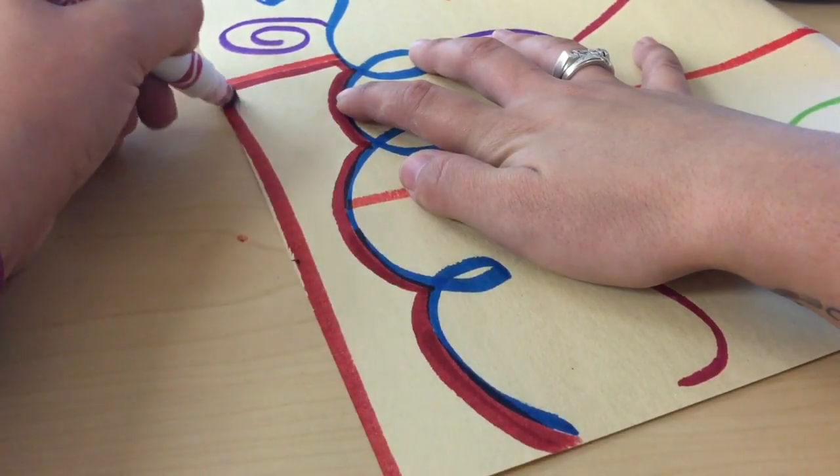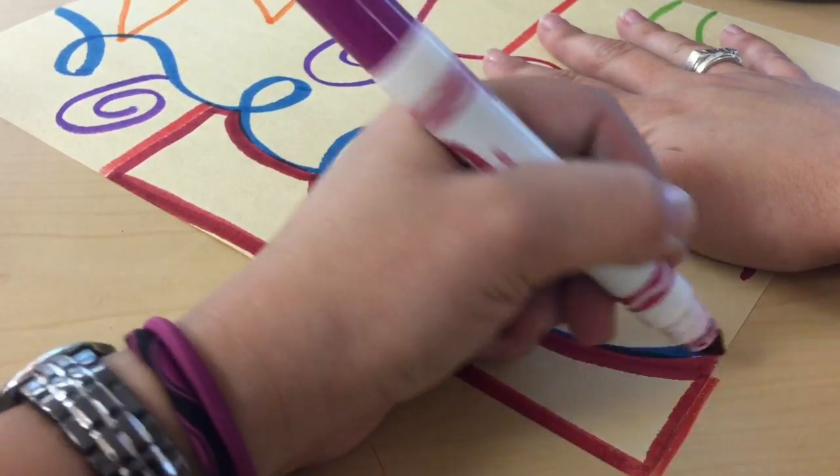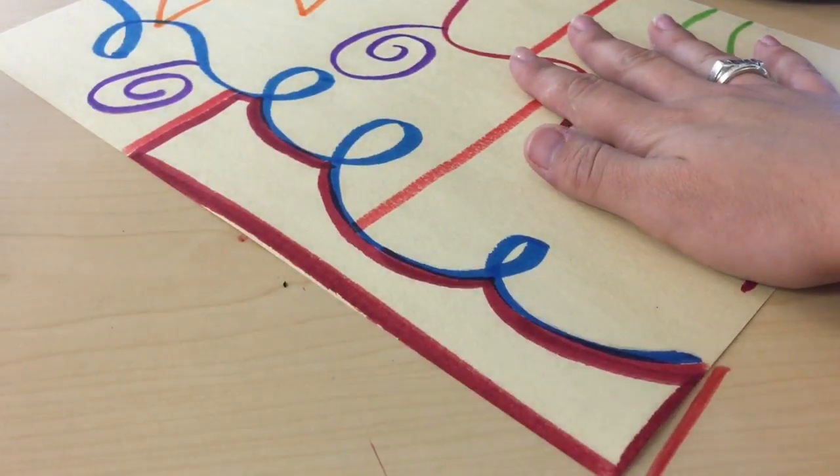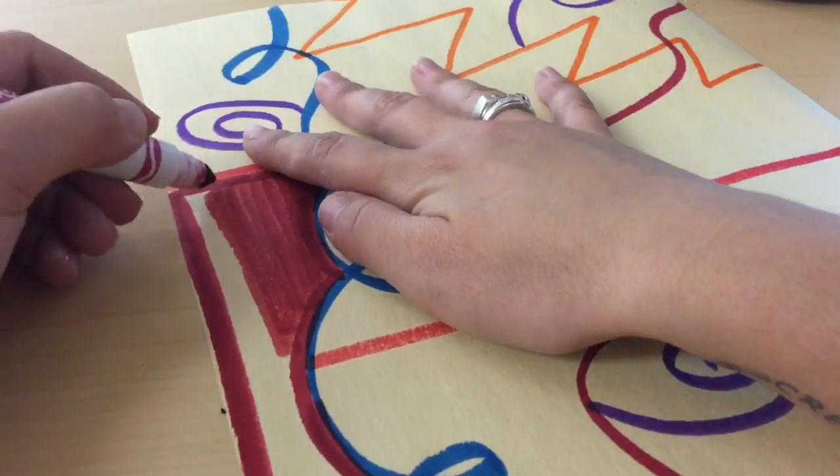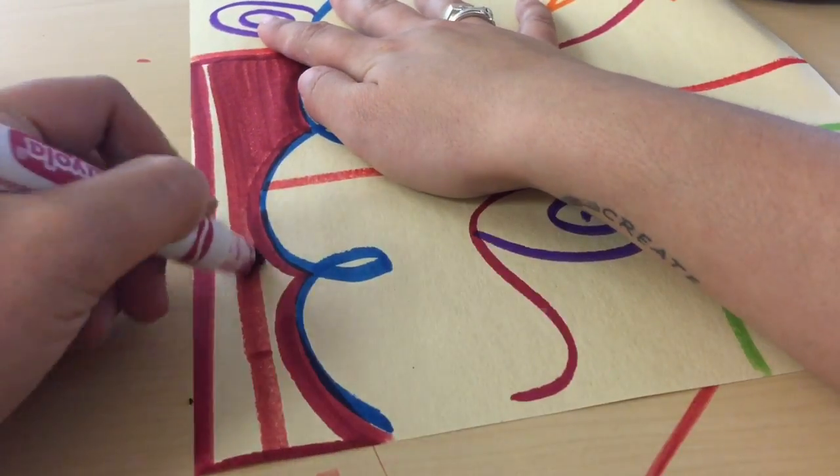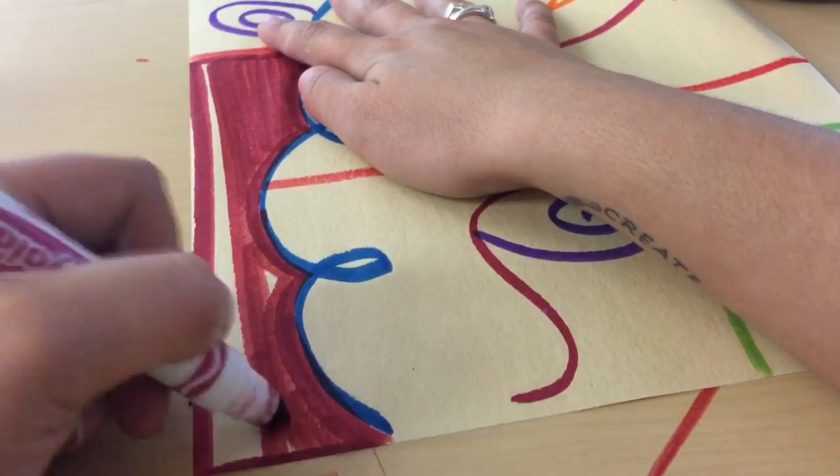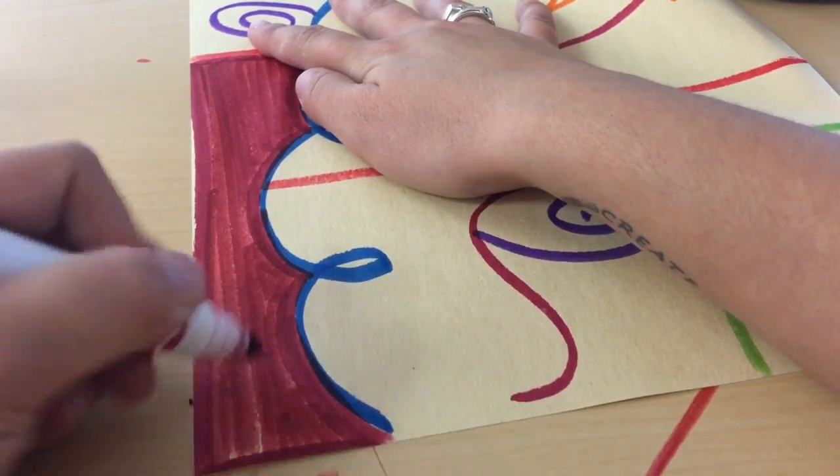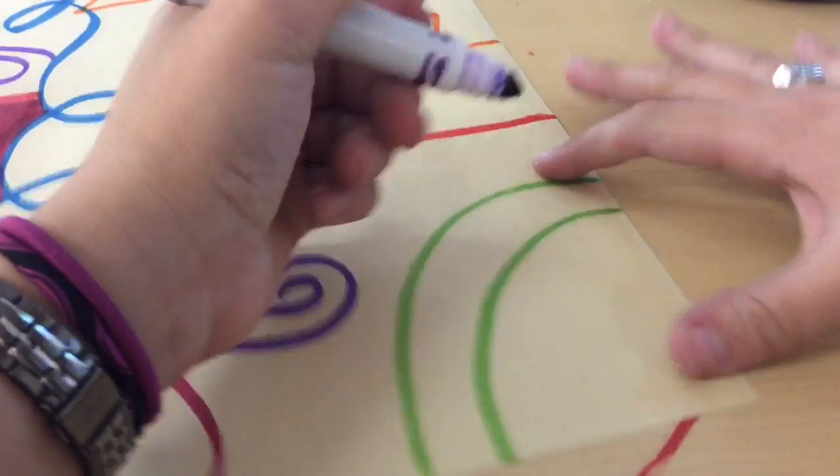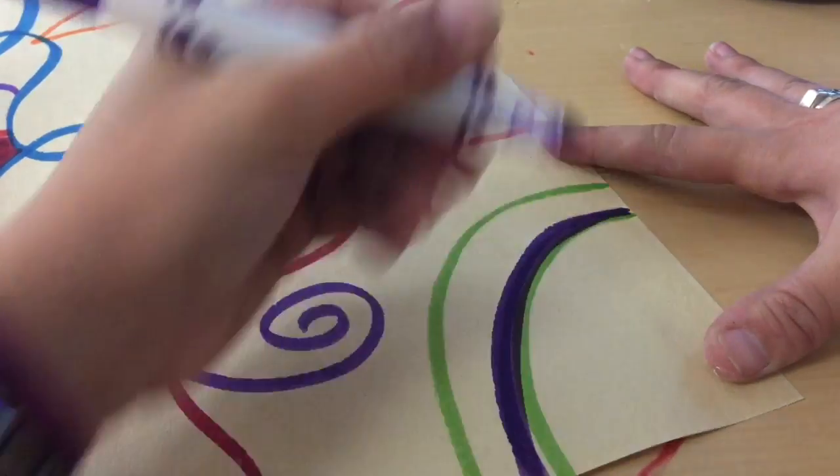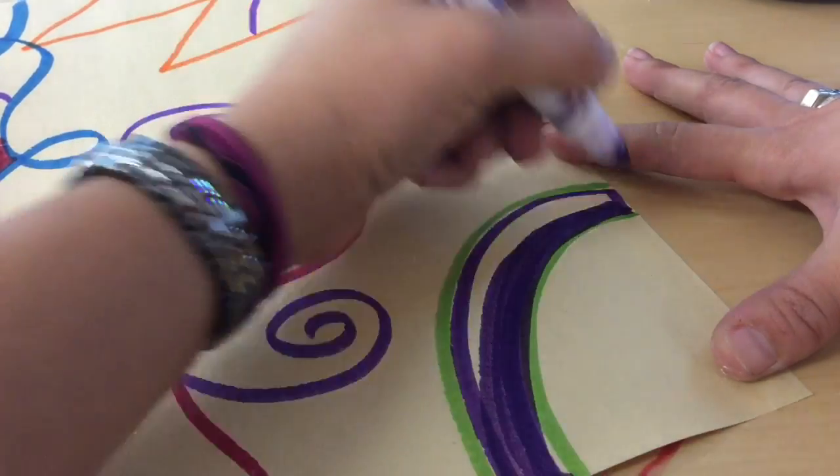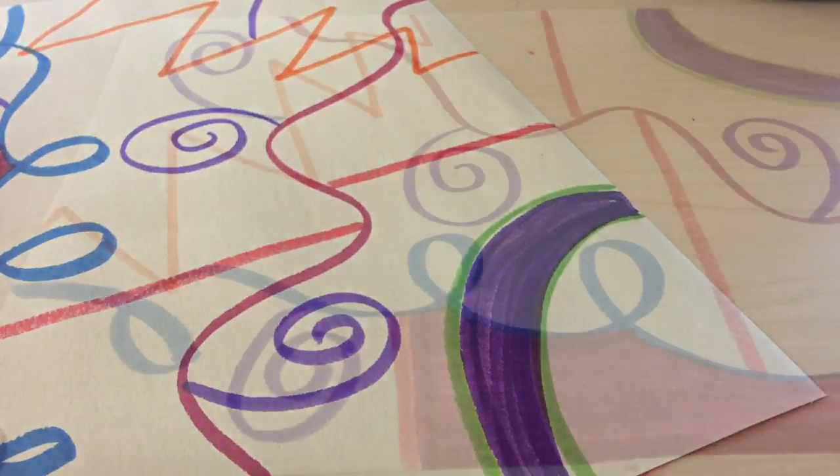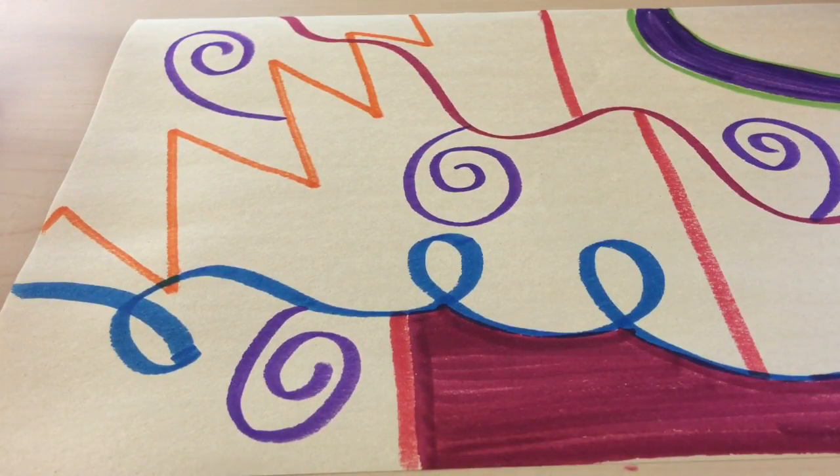I like to outline my spaces first and then fill them in. You should fill in the whole paper with as many different colors as possible.